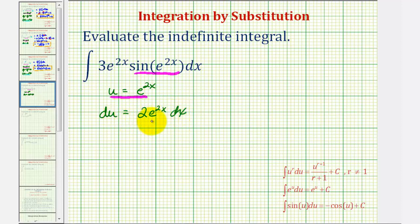Notice this resembles the remaining part of the integral. We have 3e to the 2x dx, but our equation says du equals 2e to the 2x dx.